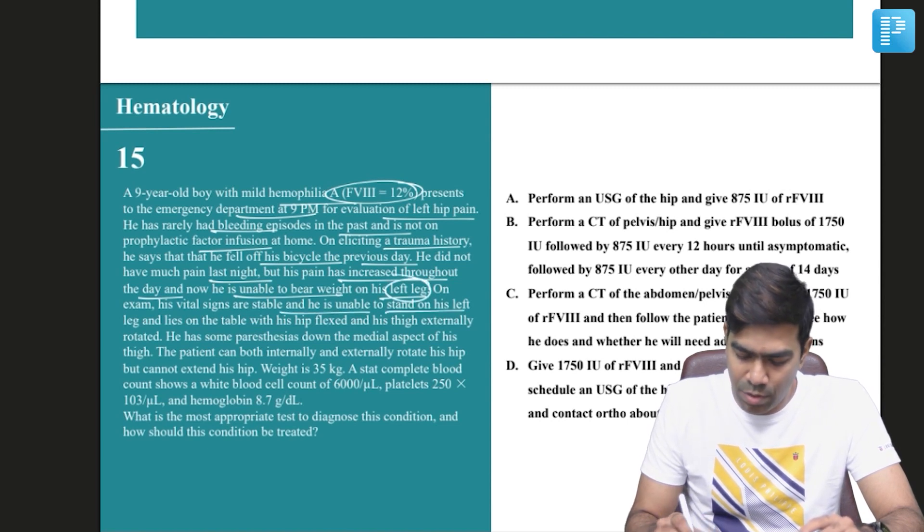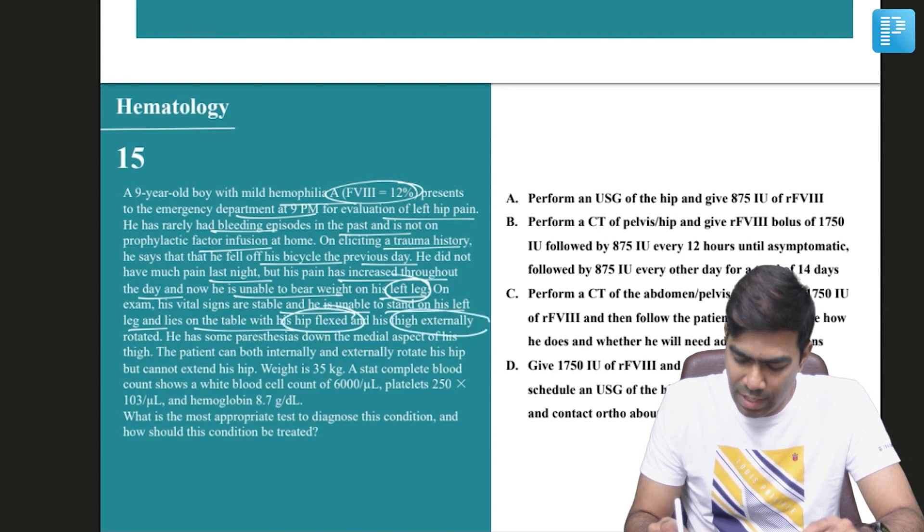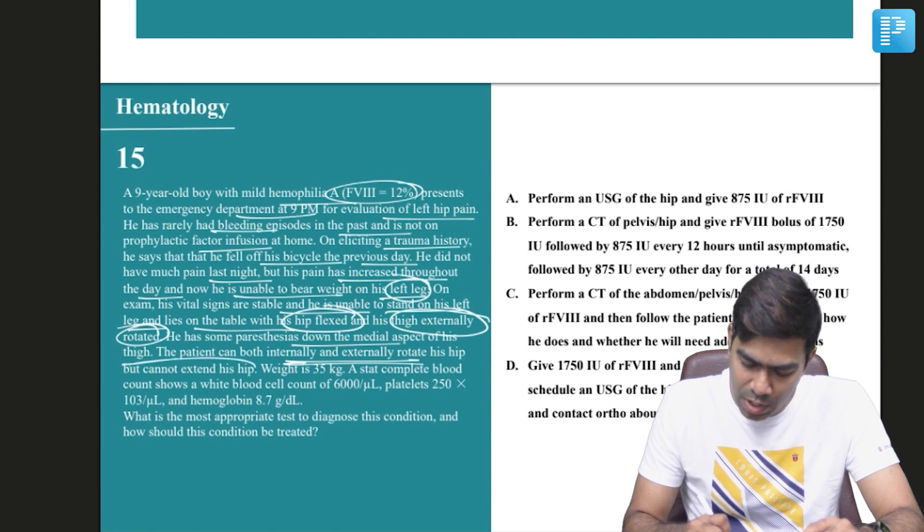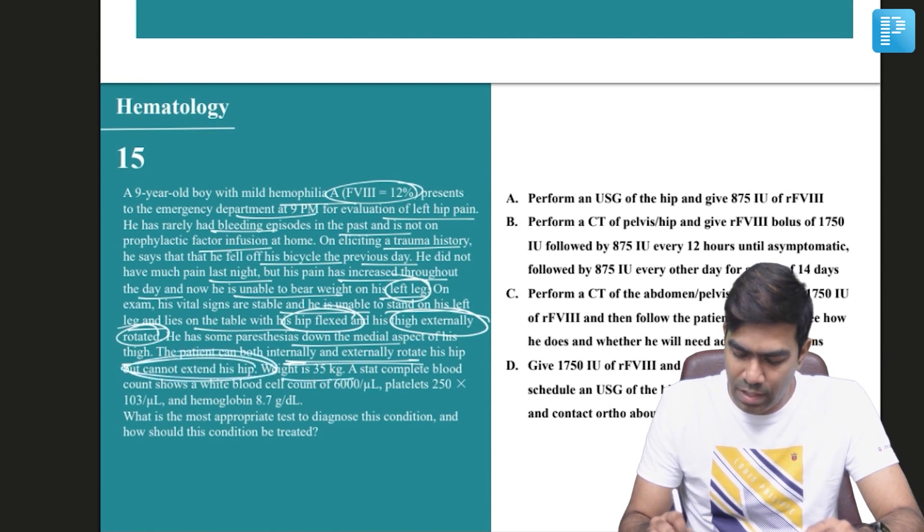On examination his vital signs are stable. He is unable to stand on his left leg and lies on the table with hip flexed and thigh externally rotated. He has some paresthesias down the medial aspect of the thigh. Patient can both internally as well as externally rotate his hip but cannot extend his hip. Weight is 35 kilograms.